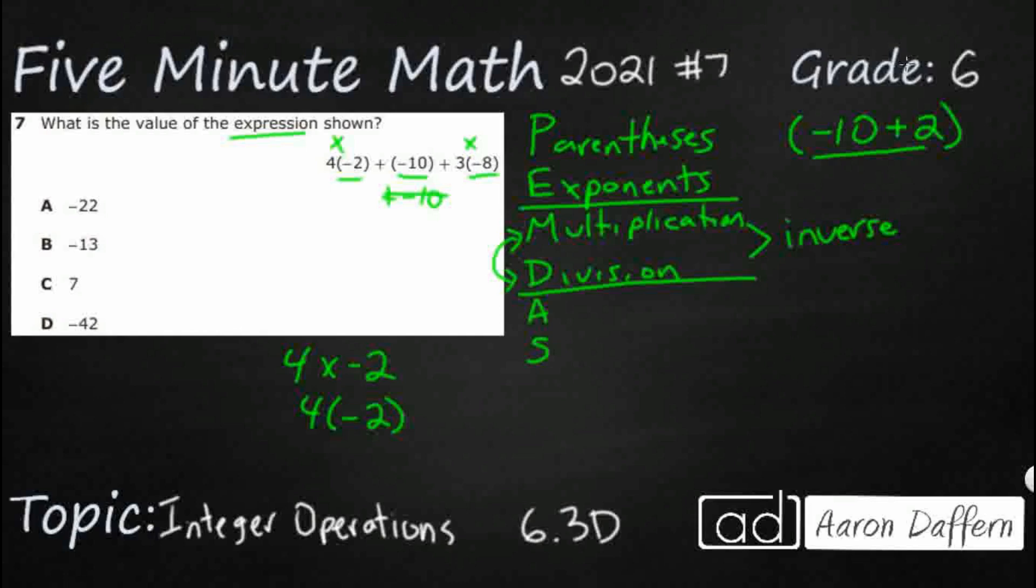So we do have some multiplication. Remember this four parentheses negative two, that represents four times negative two. So when you're multiplying and you have a positive and negative, just multiply the values first. Four times two, that's eight.